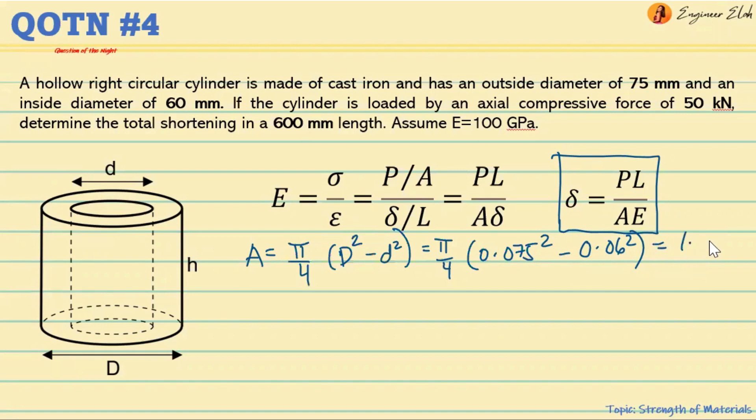Minus the inner diameter, 0.06 squared. If we compute this, the answer is 1.59 times 10 raised to negative 3 square meters. So this is our area. Now we can substitute this.